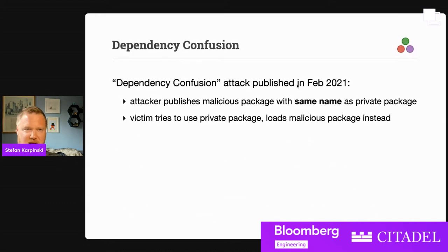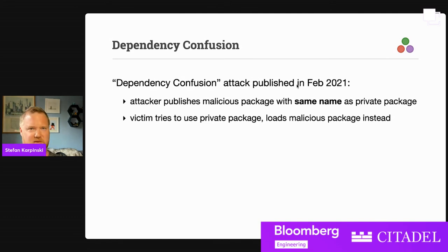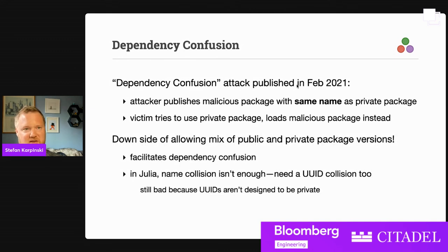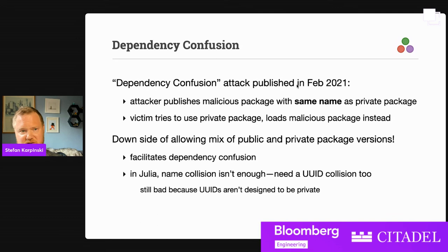But there is a downside. Back in February this year, the dependency confusion attack was announced — basically, if you can publish a malicious package in an open source registry with the same name as a private package, you can trick people into loading your malicious code. One downside of it being so easy to mix public and private versions of Julia packages is that it makes this possible as well. You don't just need to know the name — you also need to know the UUID — but that's still bad because UUIDs aren't designed to be private. So we're very interested in possible mitigation strategies.